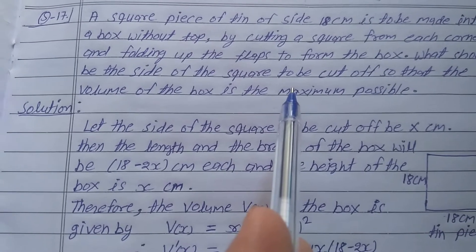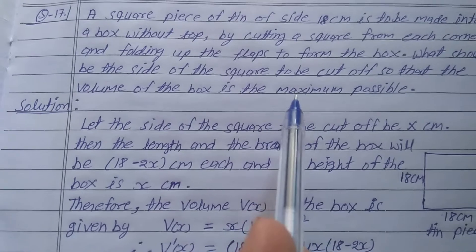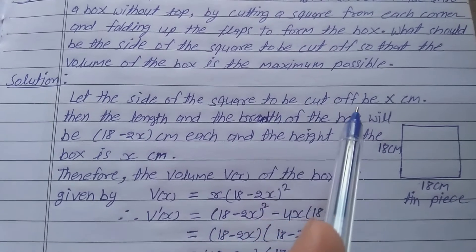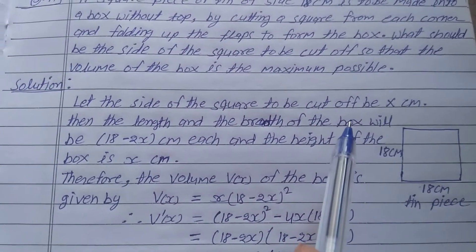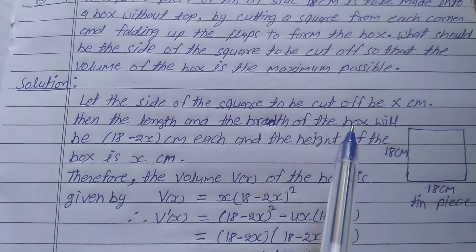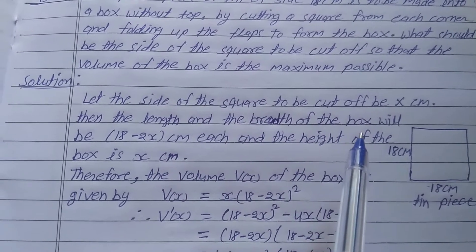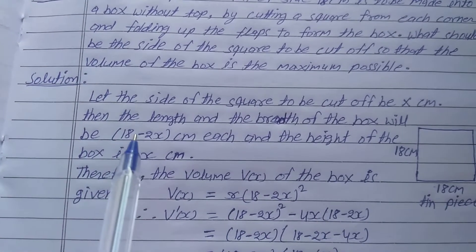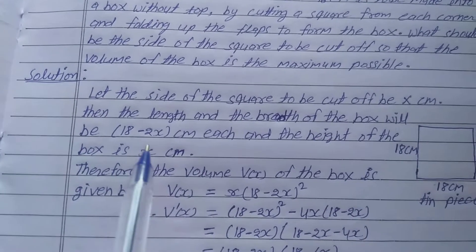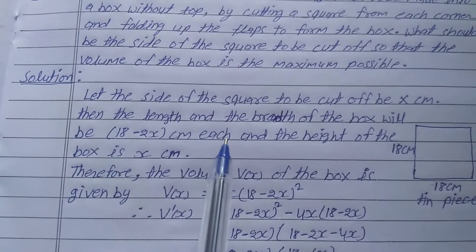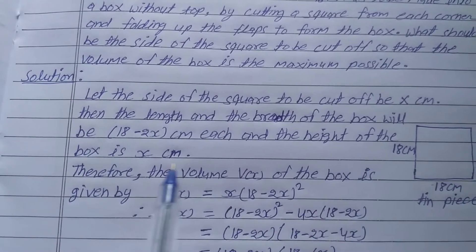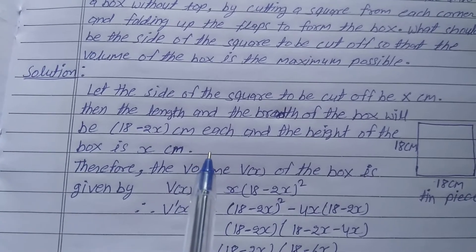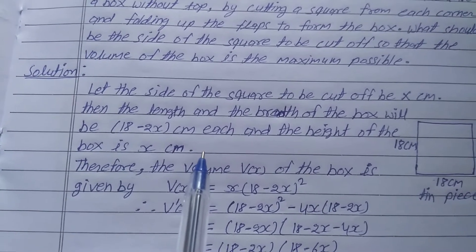Solution: Let the side of the square to be cut off be x centimeters. If we cut off x centimeter squares from every corner, then the length and width of the box will be 18 minus 2x centimeters. The height of the box is x centimeters, since an x centimeter square is removed from each corner.